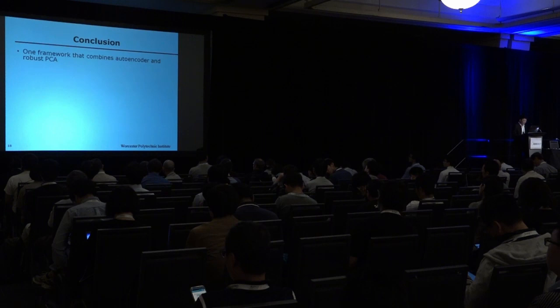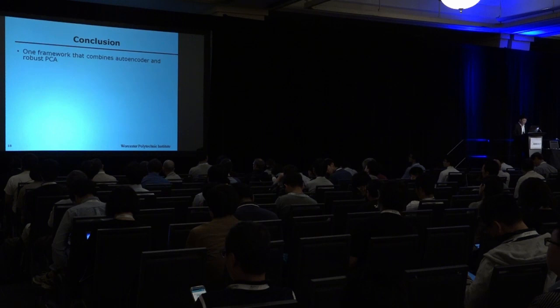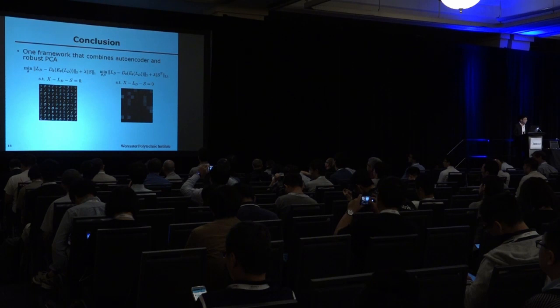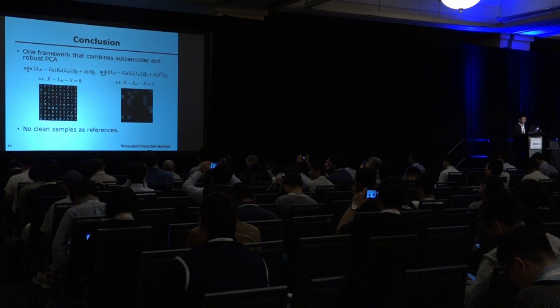In conclusion, our model is a combination of autoencoder and robust PCA. We can perform denoising and detecting outliers, and when we train our model, we do not require any clean samples as references. Thank you.